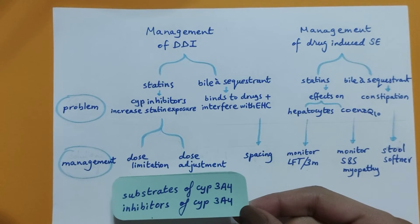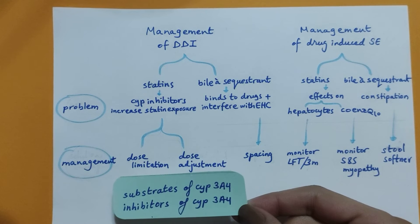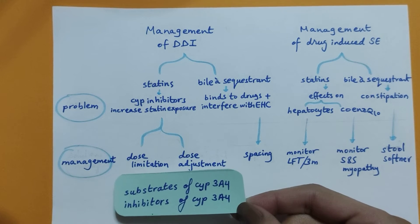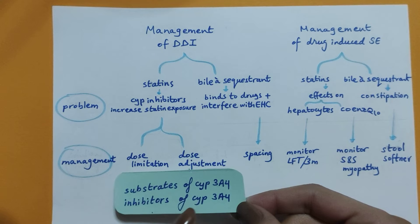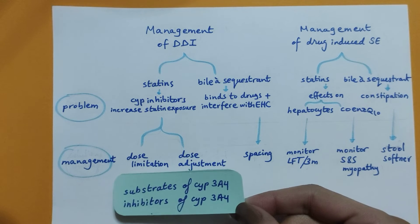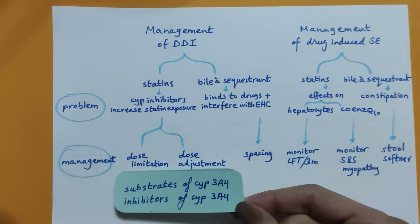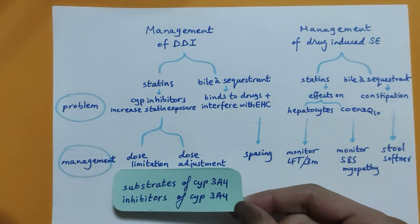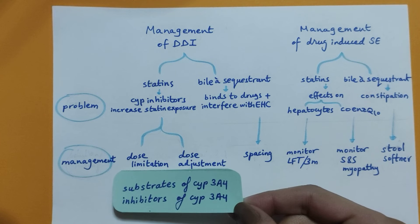Substrates of cytochrome 3A4 — for example, lovastatin, simvastatin, and atorvastatin — and inhibitors of cytochrome 3A4, which are amiodarone, a potent inhibitor of this enzyme, and verapamil and diltiazem, which are less potent 3A4 inhibitors.